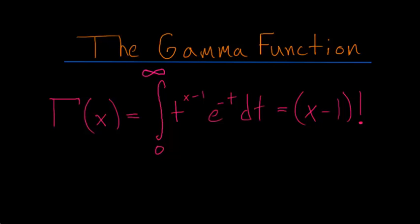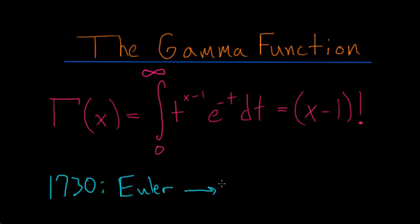The gamma function is one of the most advanced functions in all of mathematics. Gamma, as a function of x, is defined as the integral from 0 to infinity of t to the x minus 1, multiplied by e to the minus t, dt. It was in 1730 that the mathematician Leonard Euler wrote in a letter to the German mathematician Christian Goldbach that the gamma function is equal to the factorial function.